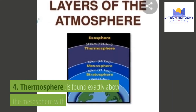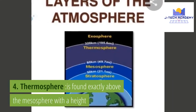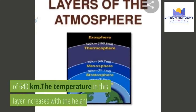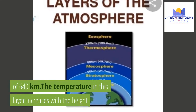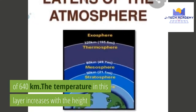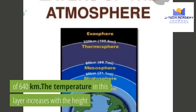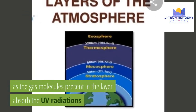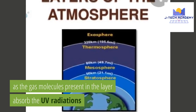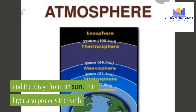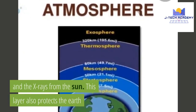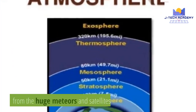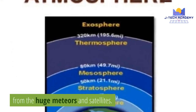4. Thermosphere. It is found exactly above the mesosphere with a height of 640 km. The temperature in this layer increases with height as the gas molecules present in the layer absorb the UV radiations and X-rays from the sun. This layer also protects the Earth from huge meteors and satellites.